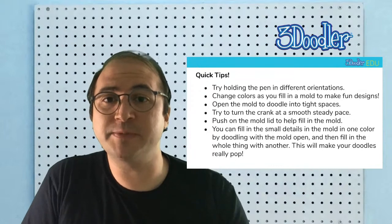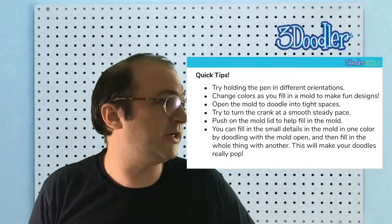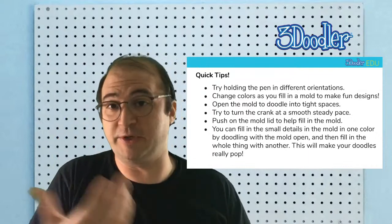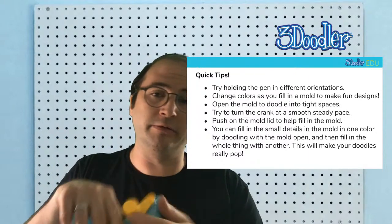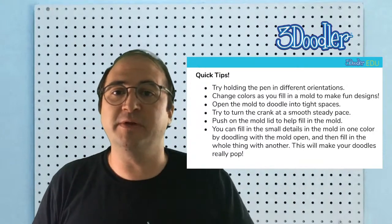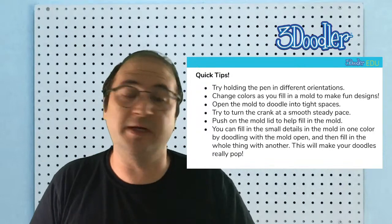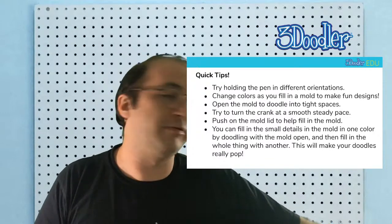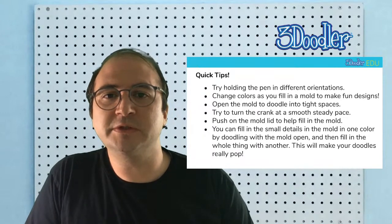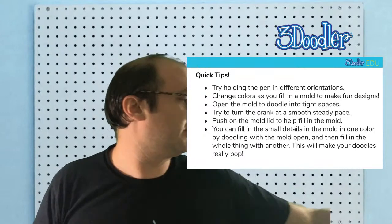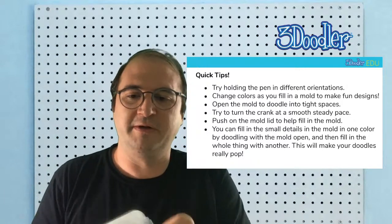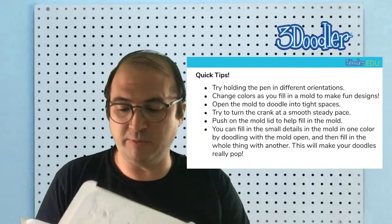Some other just quick tips. You can try holding the pen in different orientations. You saw me holding it like this, but that's only because I'm an adult. Different angles that you hold the pen will help to flow the material in different locations. That's another way to fill in a spot that might be a little harder to fill. Open the molds. Doodle in tight spaces. If you missed something in the mold, you can always open the molds, fill in the piece, and then close the mold back up.